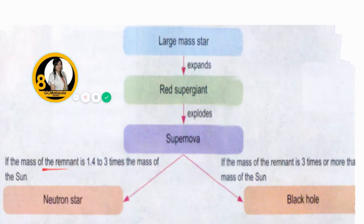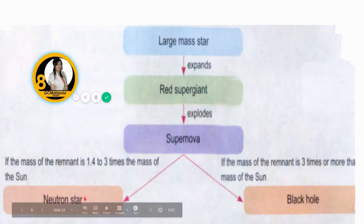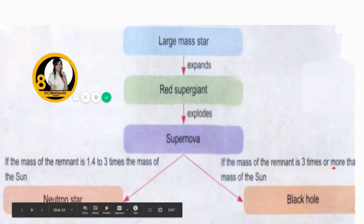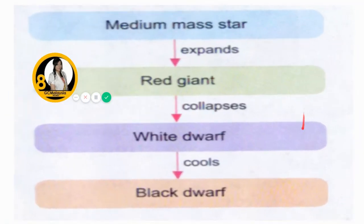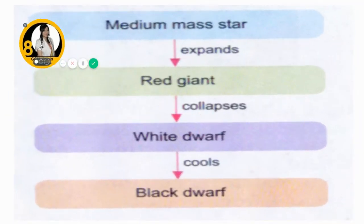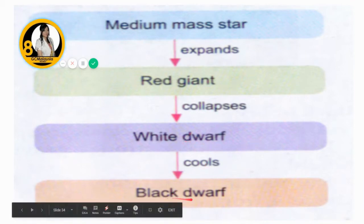If the remnant mass is less than 3 times the mass of the sun, it will become a neutron star. If the remnant mass is 3 times or more than the mass of the sun, it will become a black hole after the explosion. A medium mass star will expand and become a red giant, then collapse to become a white dwarf, and eventually a black dwarf.